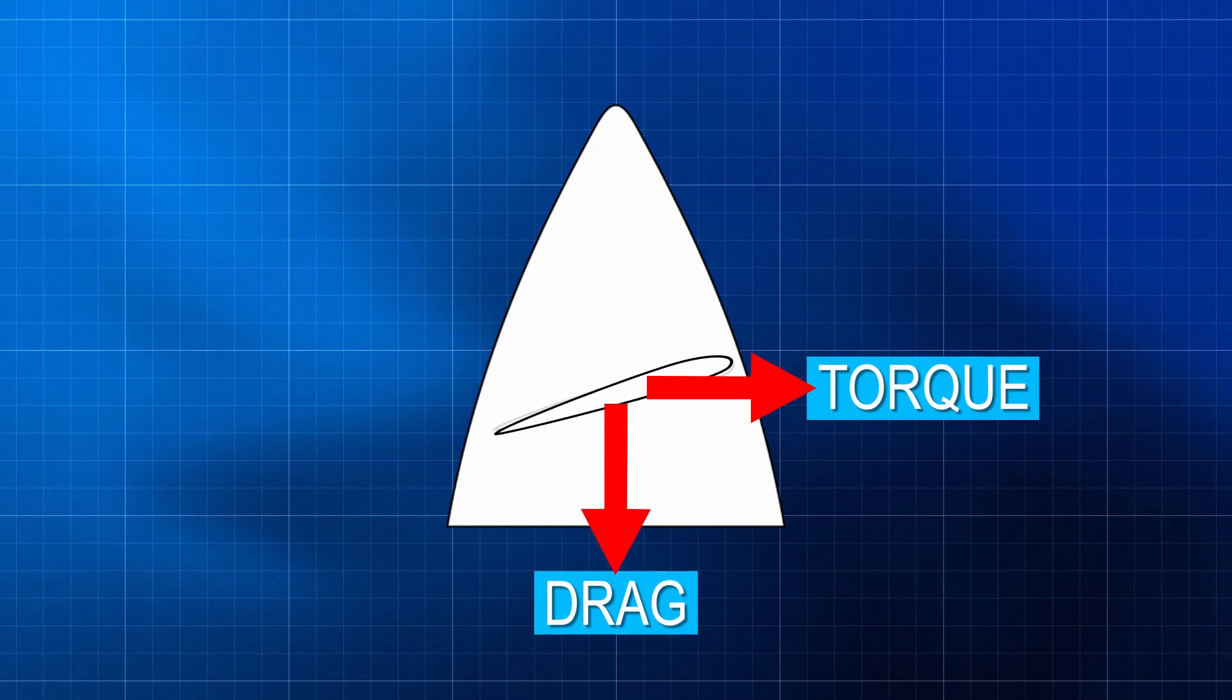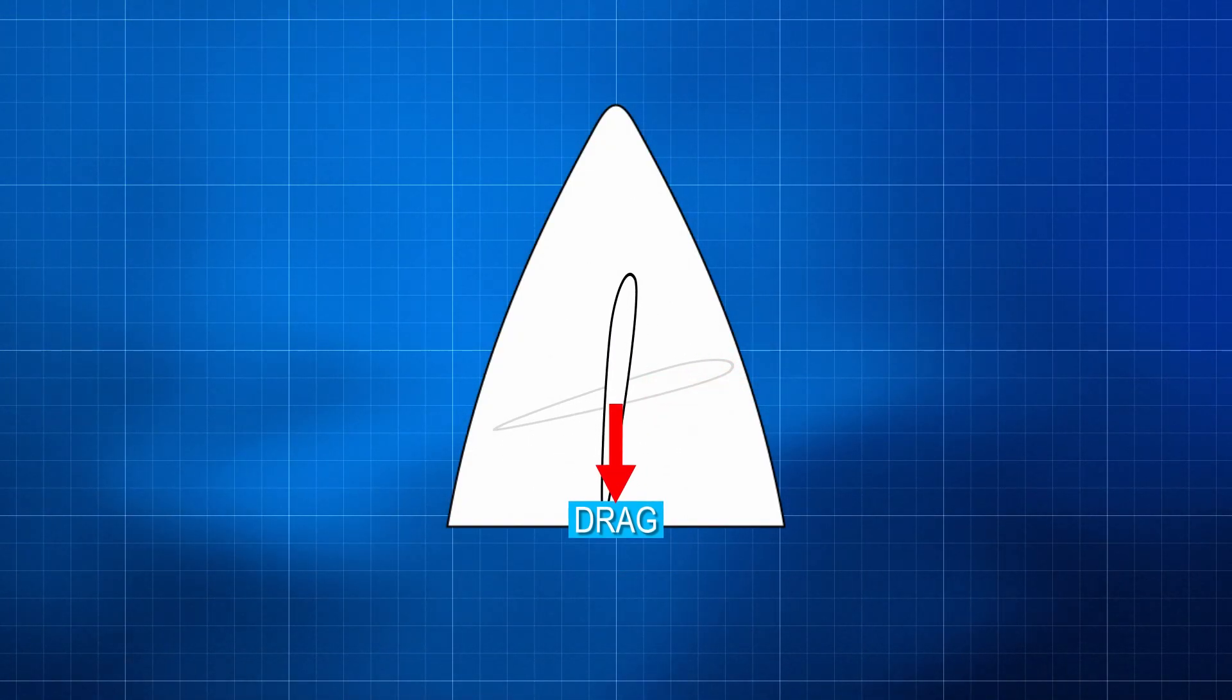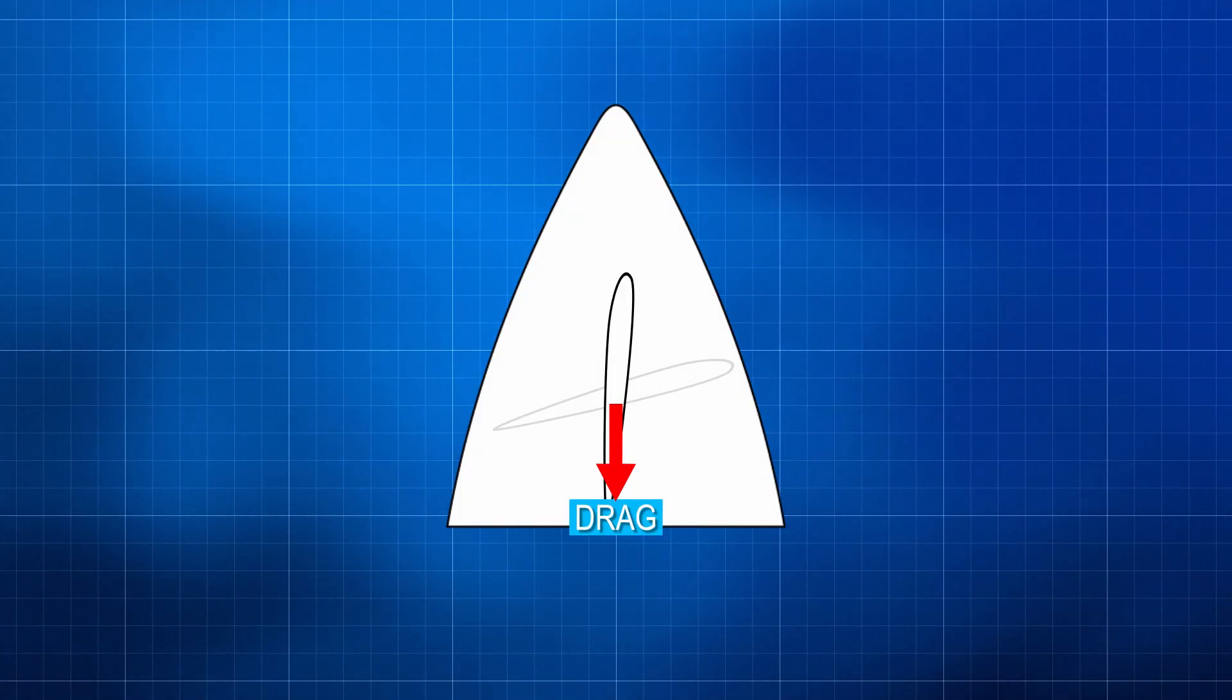Feathering refers to changing the blade angle to reduce drag and minimize the windmilling effect, which can negatively impact the aircraft's performance.